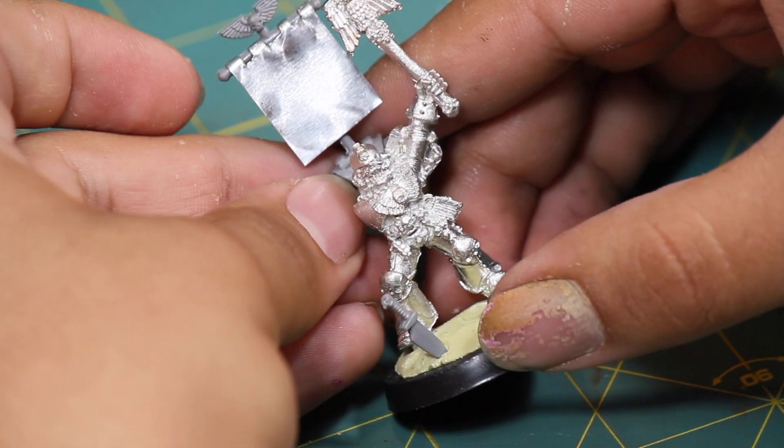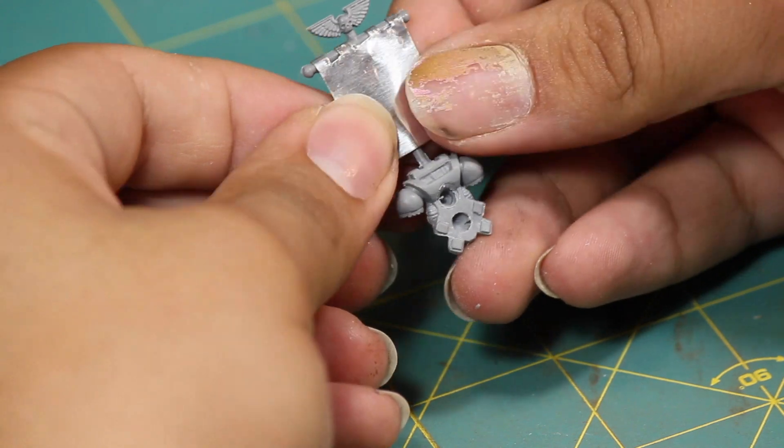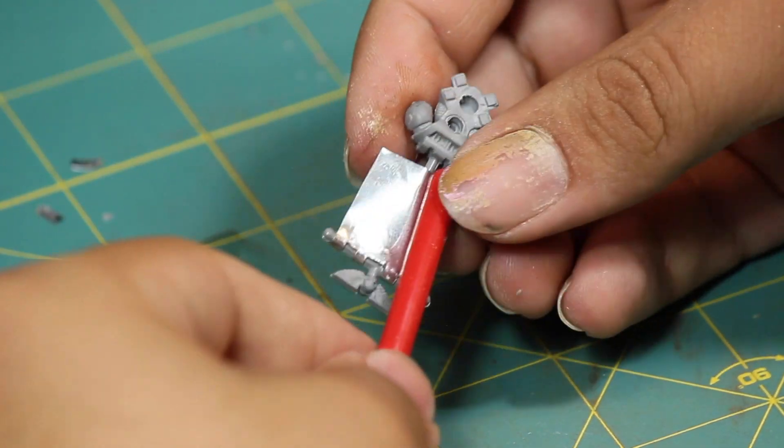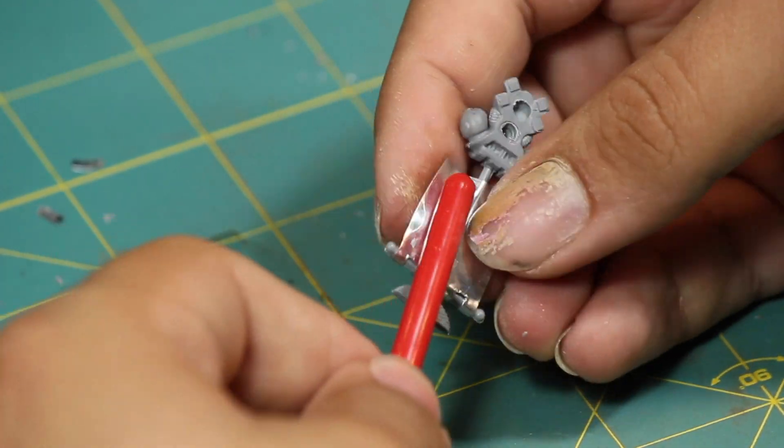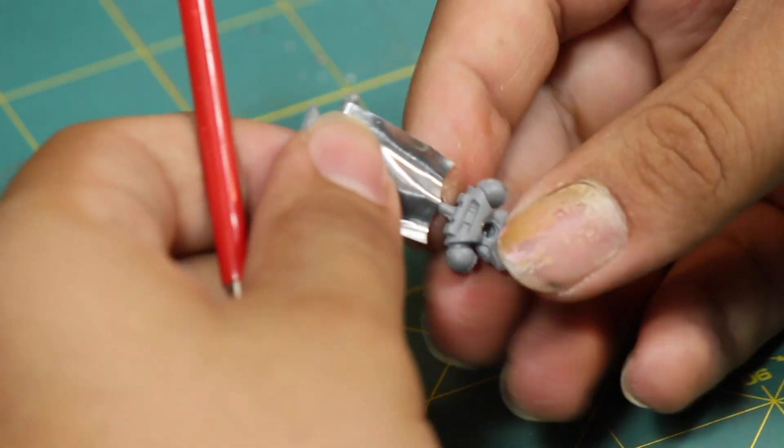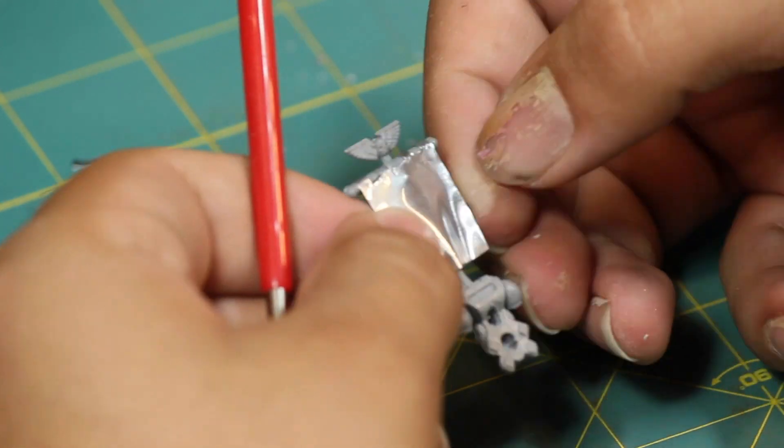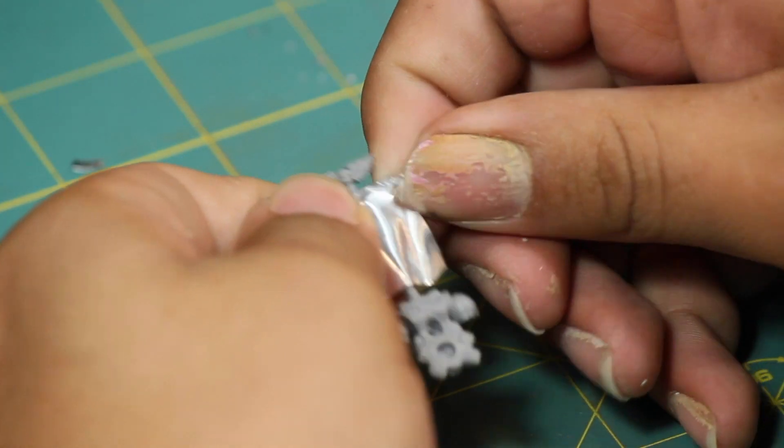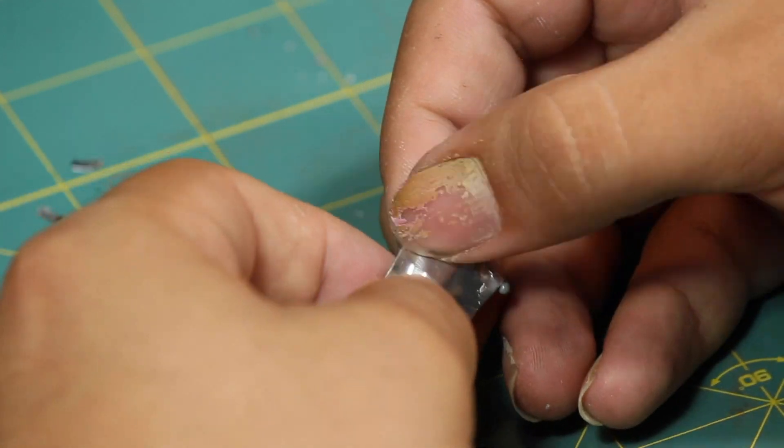Once that was dry, I checked it on the model to see how it looked and then I used my hands and the back of a round tool handle to create some creases and folds into the banner. The tin is pretty soft and so it's easy to sculpt, but it will hold its shape.